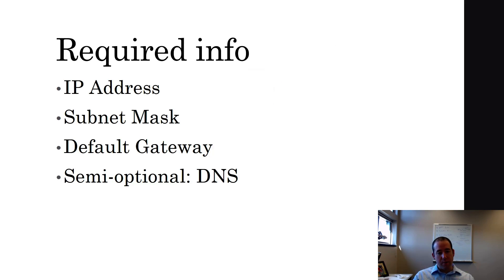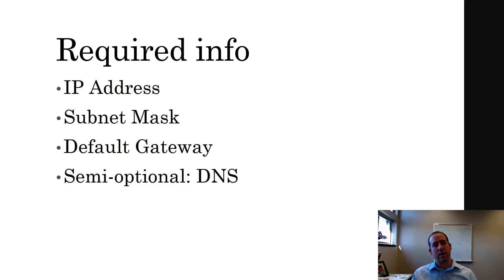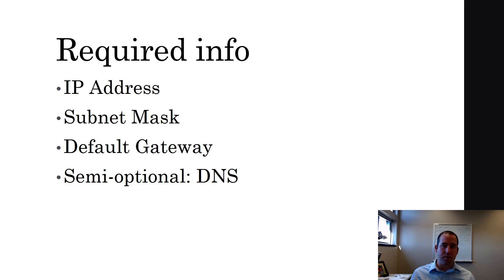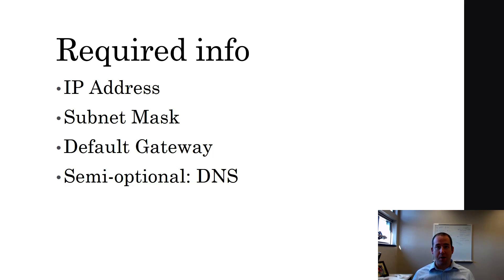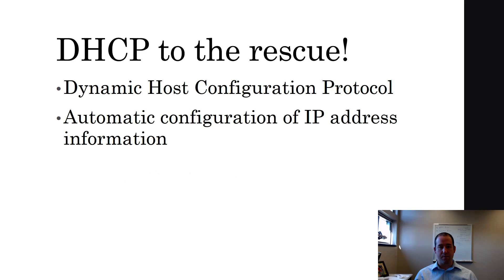So what kind of information do we need? We already talked about it: the IP address, a subnet mask, and a default gateway. The default gateway, when we talk more about routing, will make more sense — it's how your computer knows to get traffic outside of your network. If you're trying to send something to Amazon, it's going to send it to your default gateway to get out of your network. And finally, semi-optional is DNS. Unless you've memorized every IP address you could possibly need, you're going to want DNS servers configured.